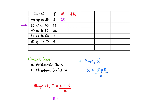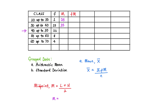For the second row, the class is 30 up to 40. The lower limit 30 plus the upper limit 40, divided by 2: 30 plus 40 is 70, divided by 2 equals 35. So the midpoint for the second row is 35. The next class is 40 up to 50: the lower limit 40 plus the upper limit 50, divided by 2. 40 plus 50 is 90, divided by 2 equals 45. So the midpoint for the third row is 45.